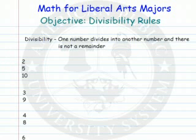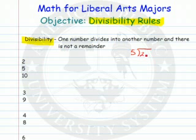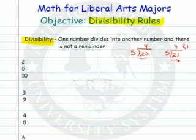In this video, we're going to look at divisibility rules. Divisibility means that one number goes into another number and there is not a remainder. For example, 5 goes into 20 four times with no remainder, so 20 is divisible by 5. But 5 does not go into 21 without a remainder — it has a remainder of 1, so 21 is not divisible by 5.